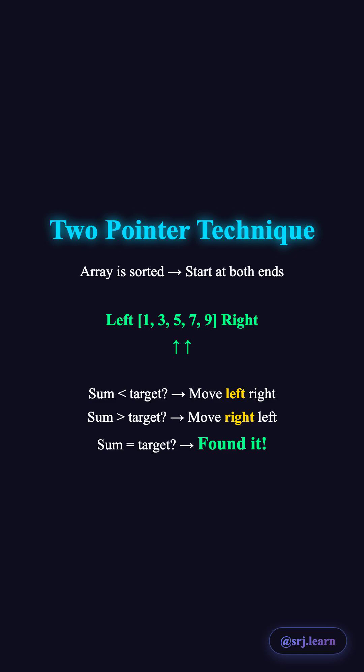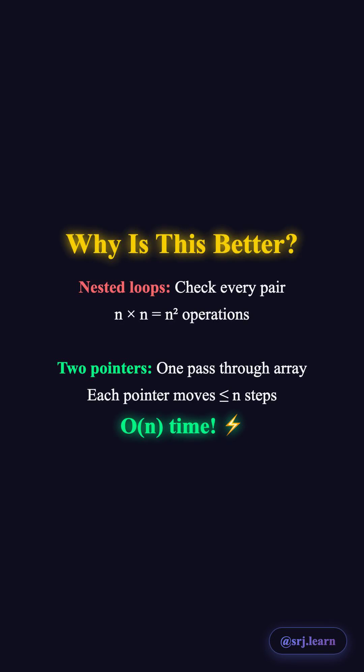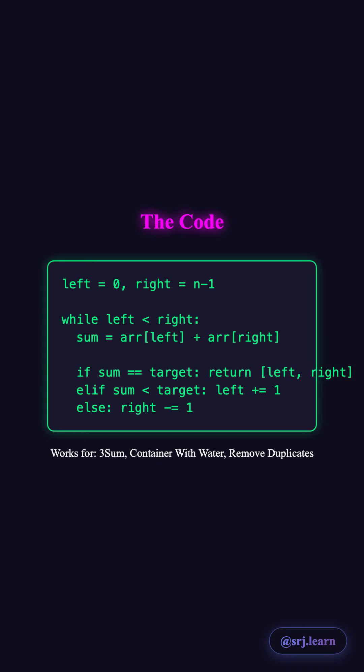That's the power of using sorted data smartly. The code is simple: initialize left at zero, right at last index. While left is less than right, calculate sum. If it matches target, return those indices. If sum is too small, increment left. If too large, decrement right. One loop, linear time — problem solved.